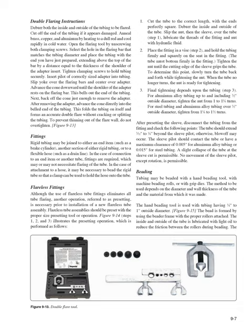Fittings: rigid tubing may be joined to either an end item such as a brake cylinder, another section of rigid tubing, or to a flexible hose such as a drain line. In the case of connection to an end item or another tube, fittings are required, which may or may not necessitate flaring of the tube. In the case of attachment to a hose, it may be necessary to bead the rigid tube so that a clamp can be used to hold the hose onto the tube. Flareless fittings: although the use of flareless tube fittings eliminates all tube flaring, another operation referred to as presetting is necessary prior to installation of a new flareless tube assembly. Flareless tube assemblies should be preset with the proper size presetting tool.